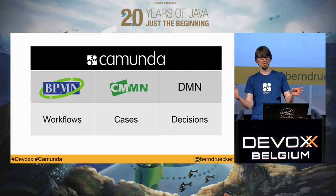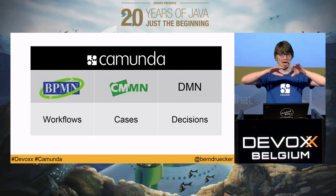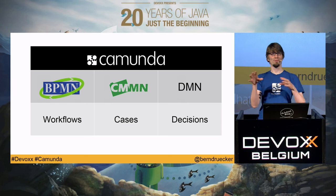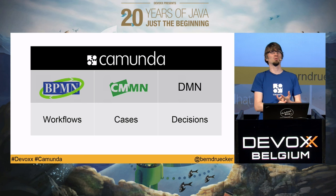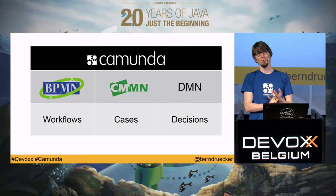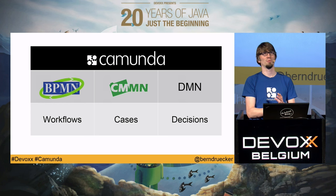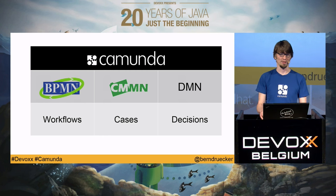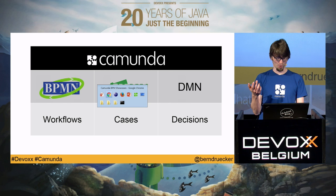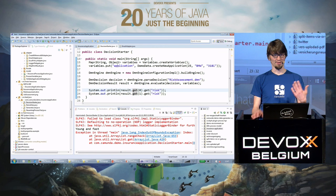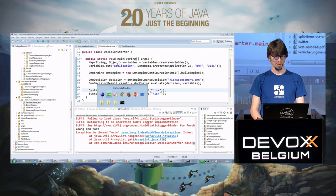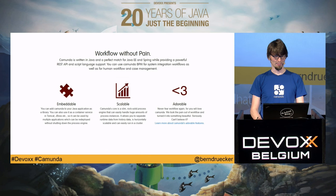What we envision on the Camunda BPM platform is that we have all three: BPMN, which is pretty mature; CMMN, which is in a pretty early stage; and DMN, which will be fully implemented in the 7.4 release. That's what you get on the Camunda BPM platform, and we are building tooling for all of it — you will have the tool chain with engines everywhere.